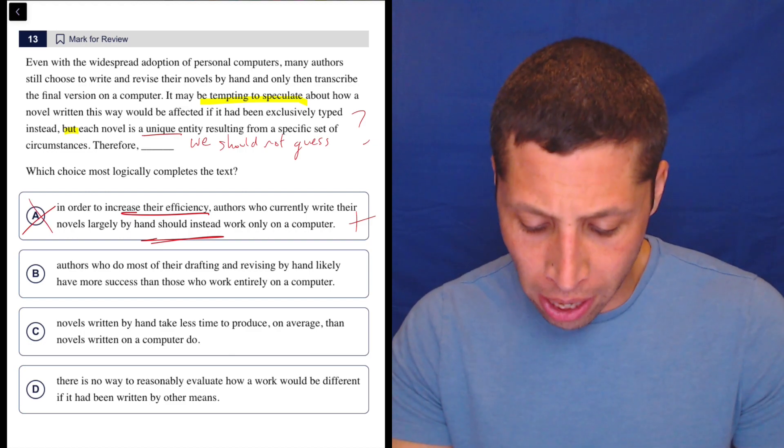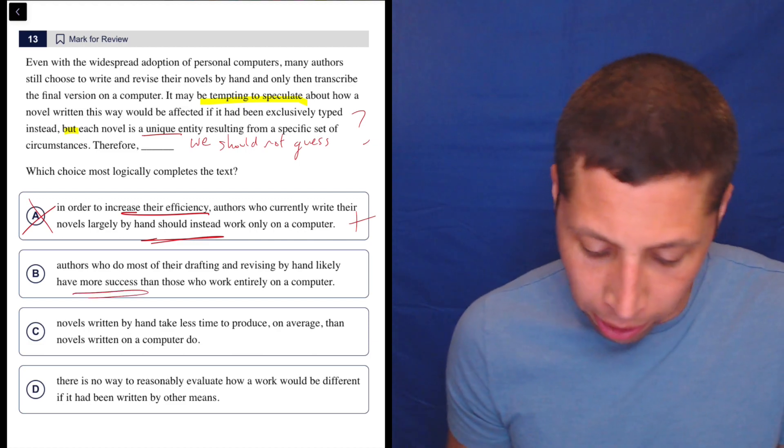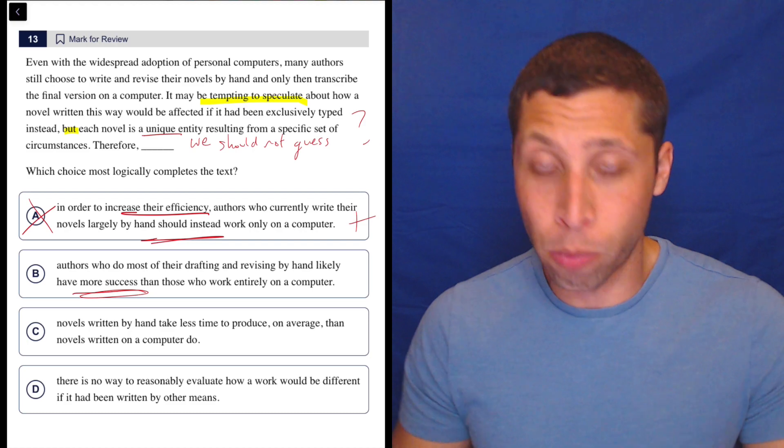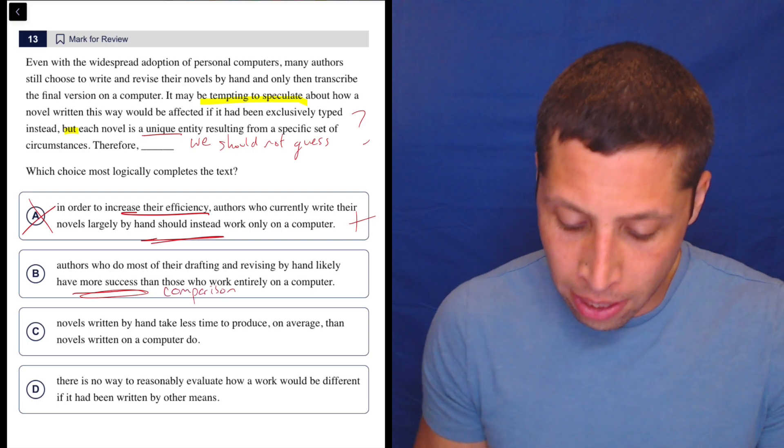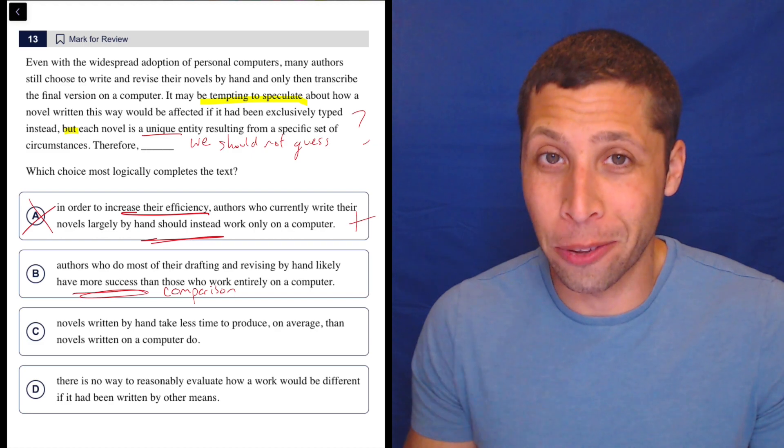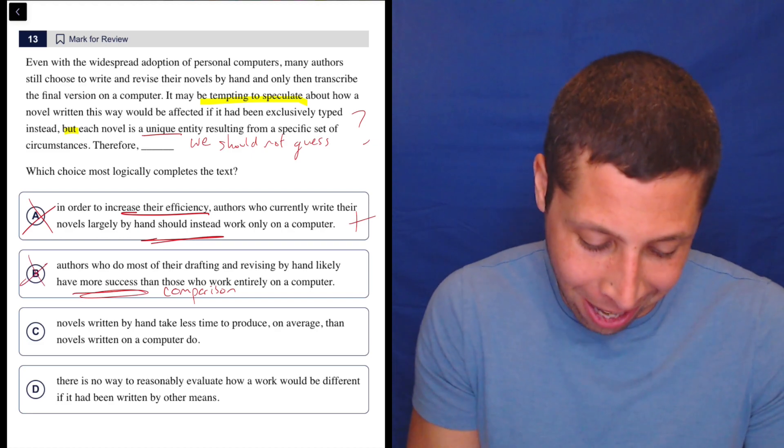B, authors who do most of their drafting and revising by hand likely have more success than those who work entirely on a computer. Again, they're comparing, they're ranking things here. So I know that's a very common trap always, but here it's very obvious, right? The whole point of the passage is that we shouldn't compare. We don't know. We don't know what's going on.